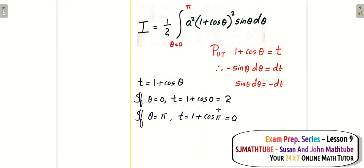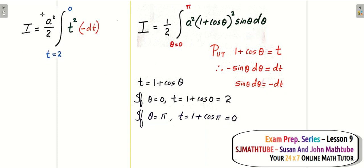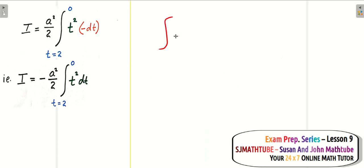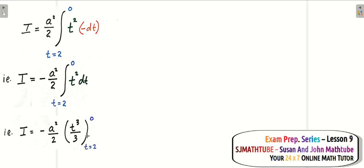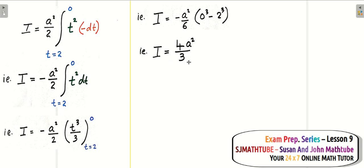Let's move ahead and substitute. Instead of 1 plus cos theta I put t, instead of sin theta d theta I use minus dt, and the limits change from theta going 0 to pi to t going from 2 to 0. a squared goes outside. The integral of t squared dt is t cubed over 3. Plugging in the upper and lower limits gives 0 cubed minus 2 cubed, and taking the 2 and 3 together gives the final answer.